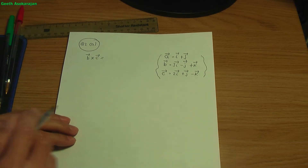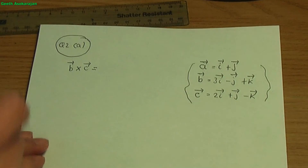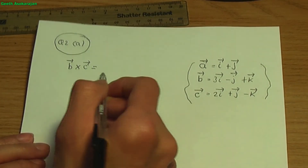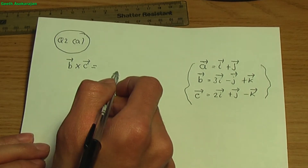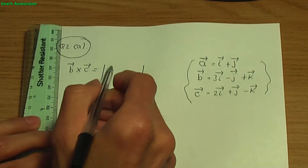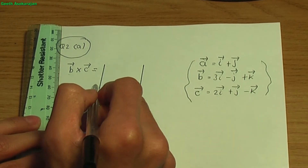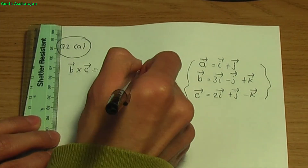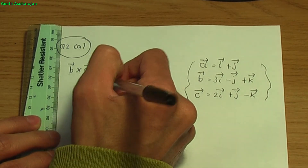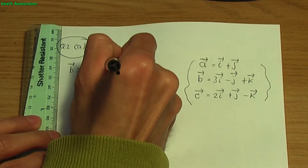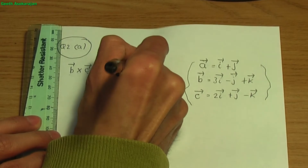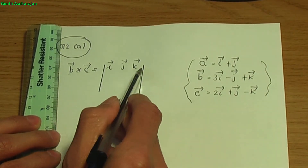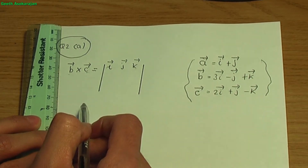Let me show you how this is done. To work out the cross product, I usually use the determinant of a 3 by 3 matrix. The first row of this 3 by 3 matrix are the unit vectors i, j and k — always write those for the first row of the determinant.